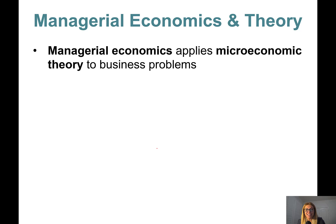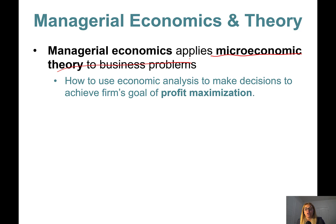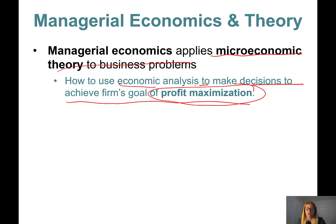This is chapter 1, part 1. In this part we will define managerial economics. Managerial economics applies microeconomic theory to business problems. Economics is divided into microeconomics and macroeconomics — managerial economics is based on microeconomics. It is all about how to use economic analysis to make decisions to achieve the firm's goal of profit maximization. We'll assume companies are there to maximize profits; we will study some non-profit organizations, but our main focus is on profit-maximizing firms.